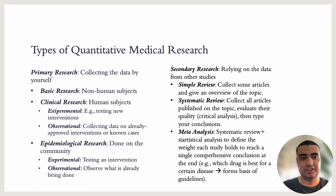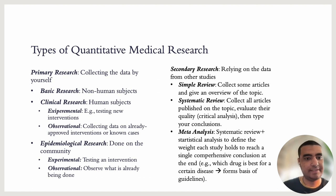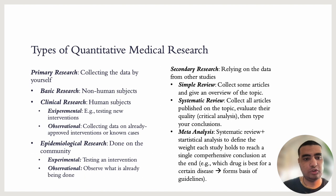In terms of quantitative research, we have primary or secondary. Primary research means you are making a questionnaire or going into the field and collecting data yourself. Secondary means you are taking data from previously made research from other researchers and compiling it to make a narrative review or systematic review with or without a meta-analysis. We will be focusing on primary research for our course. We have basic research, which is done on non-human subjects — basically animal cells, genes, etc. Then we have clinical research, which can be experimental or observational, done on humans in the hospital.